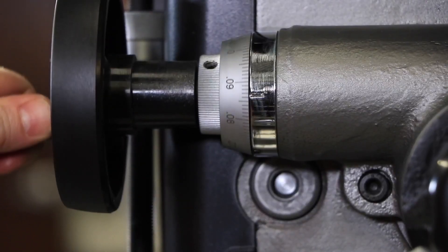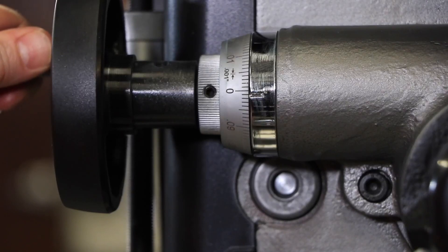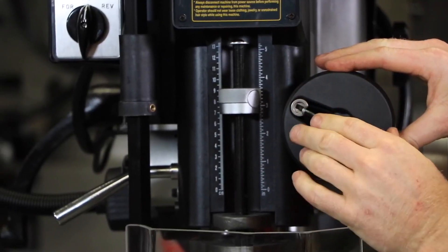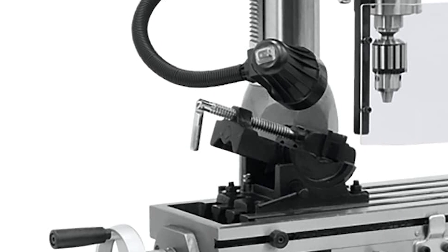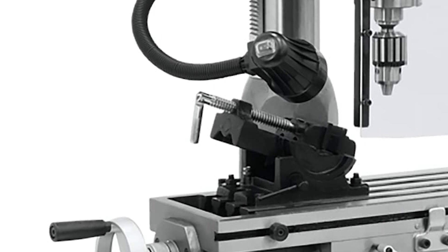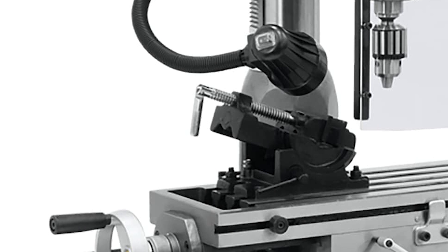Additionally, it includes a drill press angle vise, 0.5 drill chuck, and chuck arbor for added functionality. Backed by Jet's reputable 2-year warranty, it offers assurance against manufacturing defects, showcasing its reliability and quality assurance.